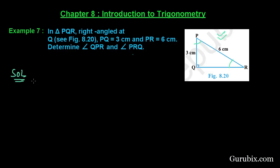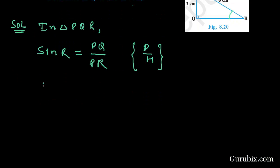Let us see how to solve this question. We shall start with triangle PQR and find sine R. Then it will be PQ over PR, because sine equals perpendicular upon hypotenuse. If R is the given angle, then PQ is perpendicular and PR is hypotenuse. So this equals 3 centimeters over 6 centimeters.